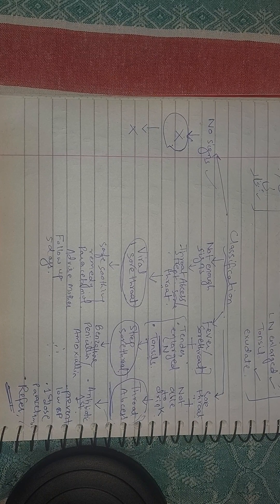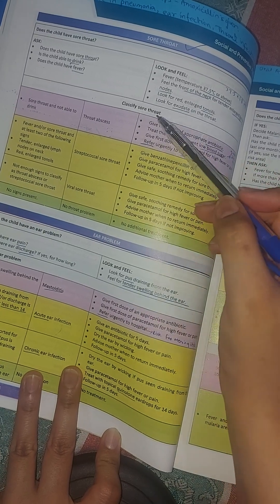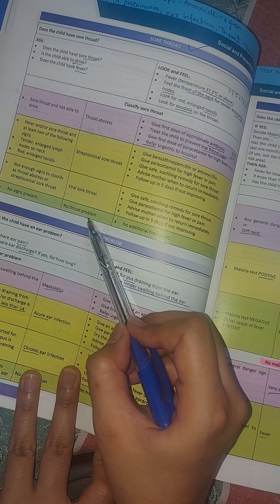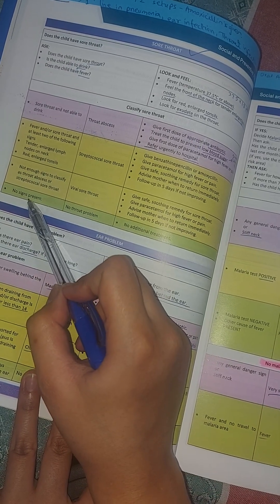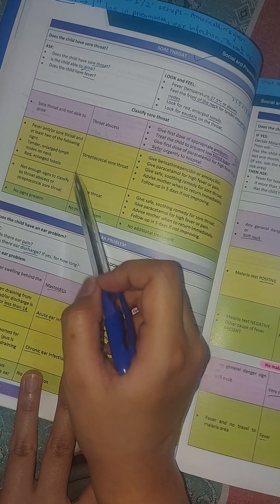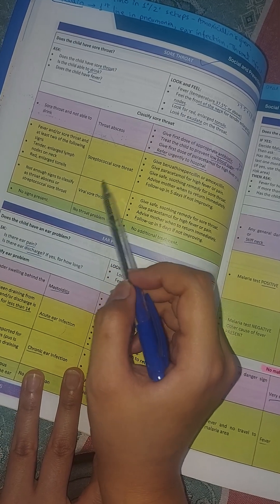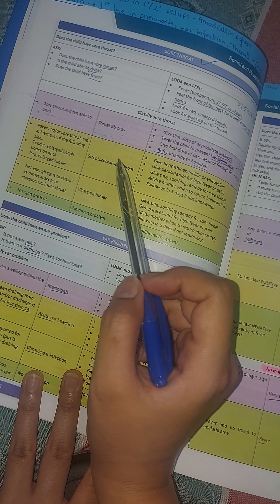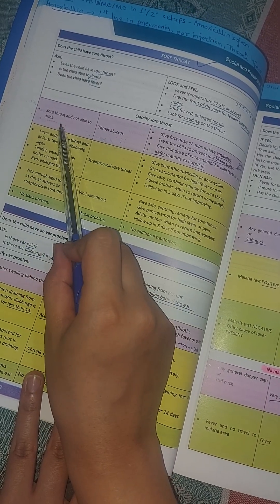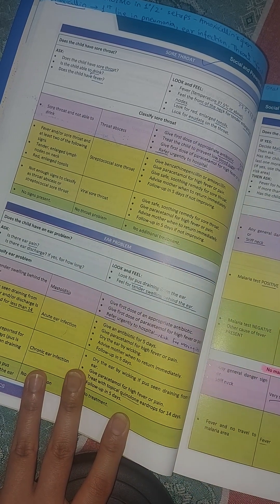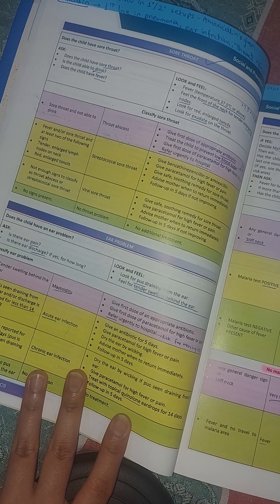That was about sore throat. Now let's look at the book — this is the IFNCI table for sore throat. The green category means no signs, no sore throat problem, and you can manage at home. Viral sore throat and streptococcal sore throat are OPD cases that can be managed and sent home with advice. The severe case — throat abscess — must be referred directly.